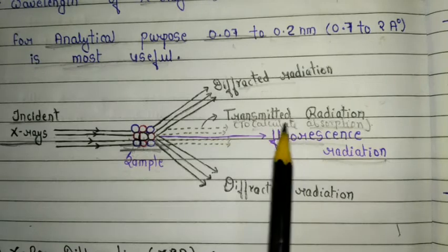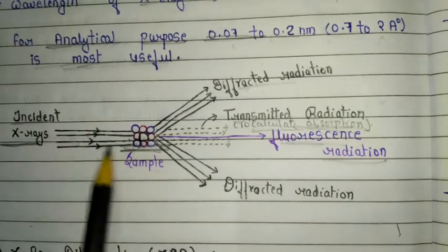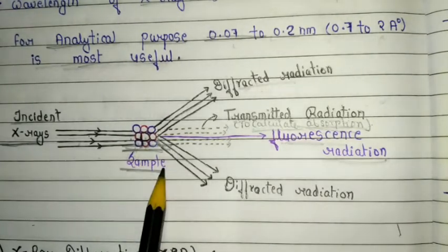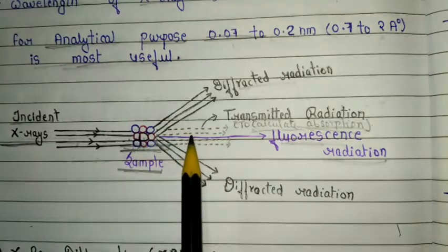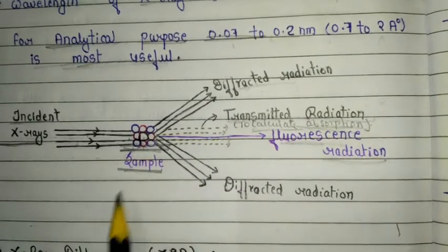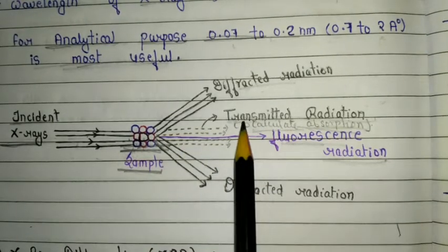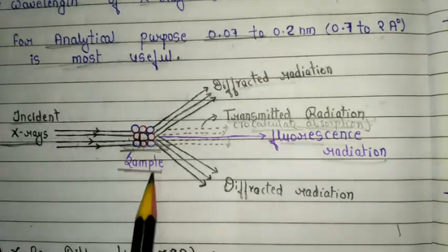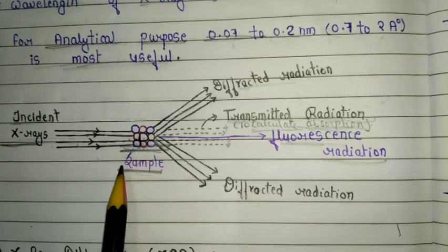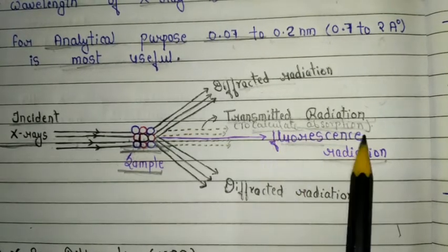The second is transmitted radiation. Using transmitted radiation, we can calculate the absorption. When incident X-ray strikes the sample, some radiations are absorbed by the sample and the rest come out as transmitted radiation. When we subtract transmitted radiation from incident radiation, we get the absorption radiation. So basically, the sample absorbs some radiation and these are called absorption radiations.